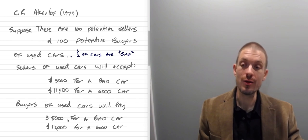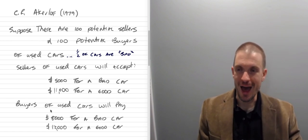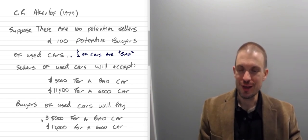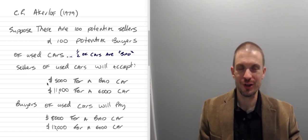So there's gains from trade, right? If a buyer buys a bad used car and they know it's a bad used car, they'd pay $8,000 for it. The seller would want $5,000. There's $3,000 of economic surplus that can be gained between this maximal willingness to pay and the willingness to accept.